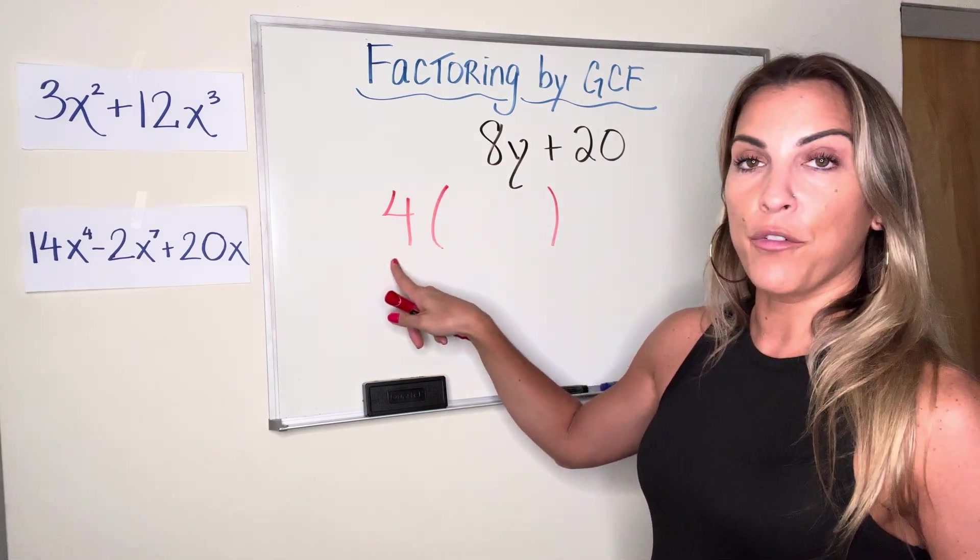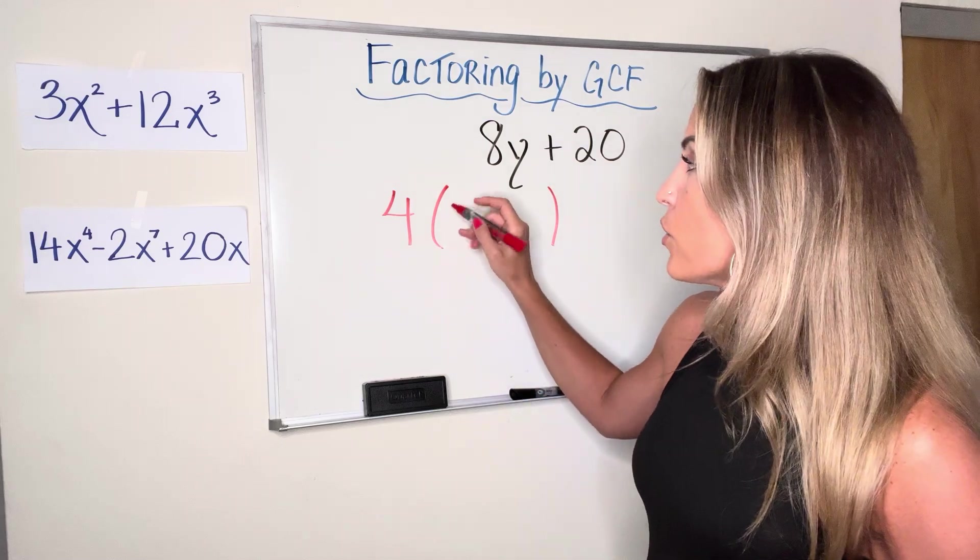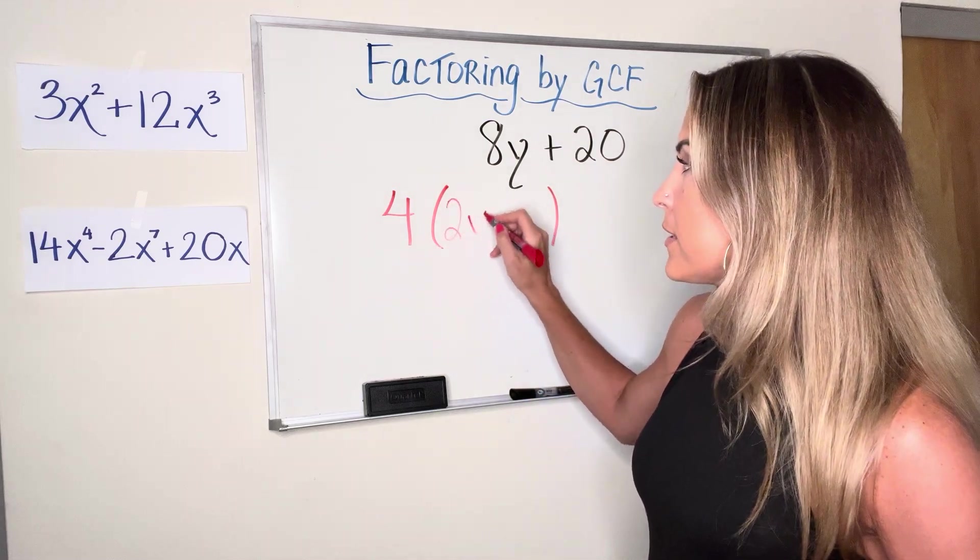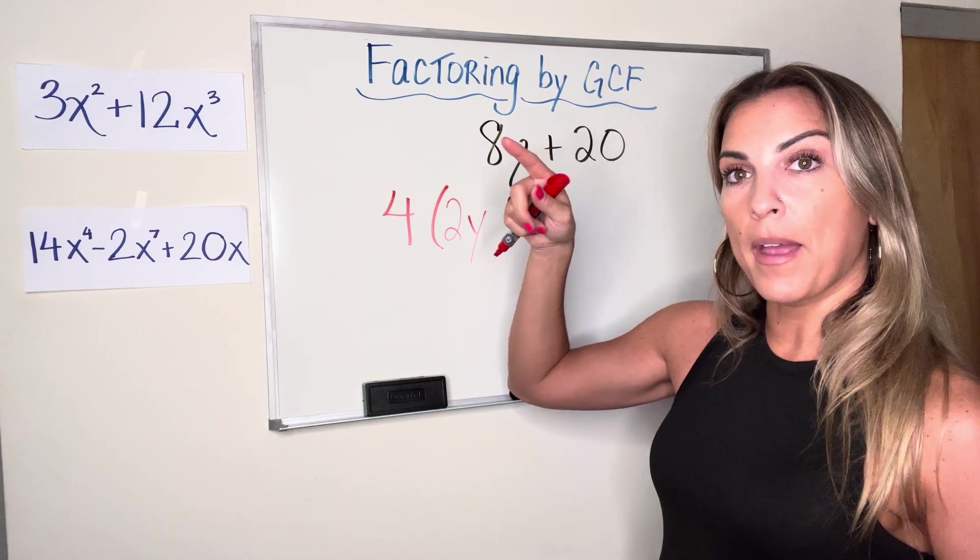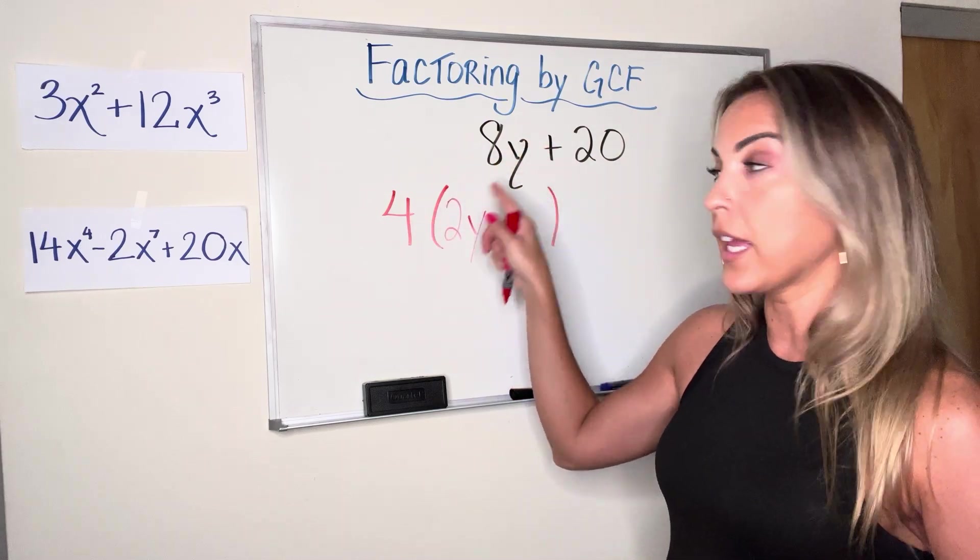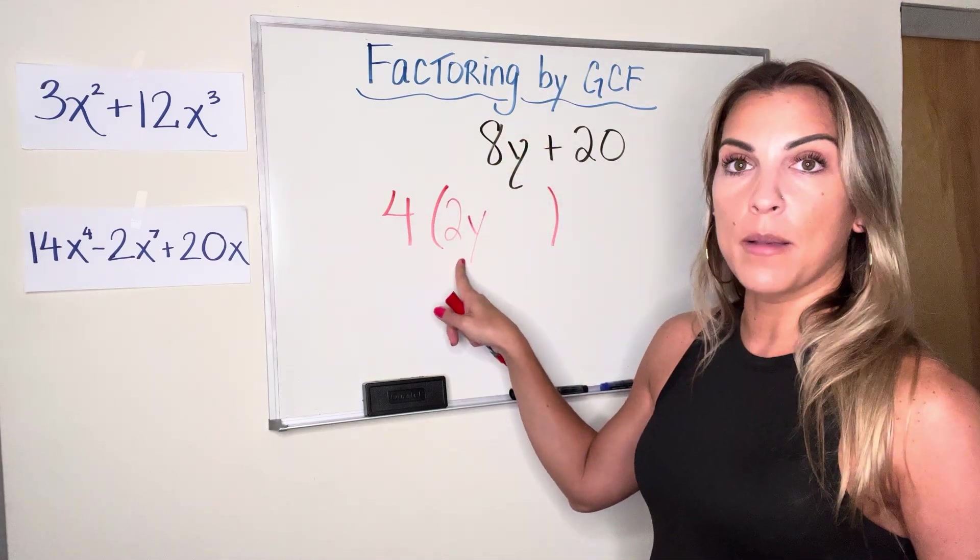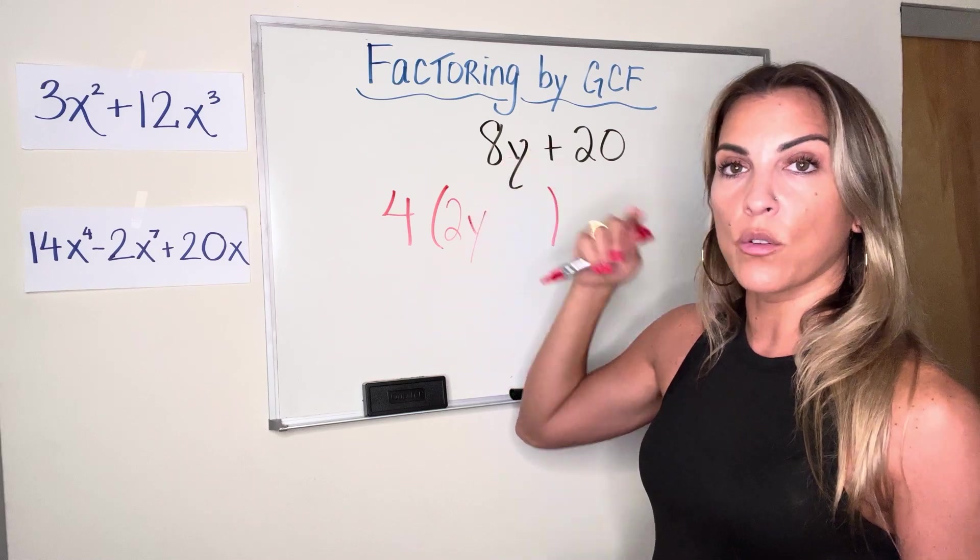8y divided by 4 is 2y. So that's what I'm going to start with in my parentheses. And I can see that if I'm thinking one step ahead to distributing this out to check, if I multiply 4 times 2y, I'm going to get 8y, right? So that's your check.